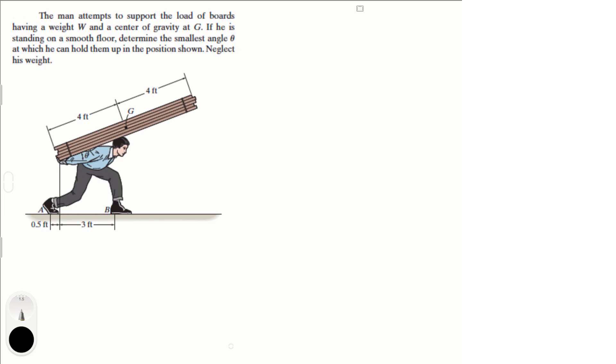Alright guys, let's do this problem that says the man attempts to support the load of boards having the weight W and a center of gravity at G. If he is standing on a smooth floor, determine the smallest angle theta at which he can hold them up in the position shown. Neglect his weight.